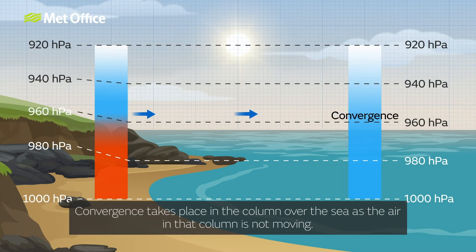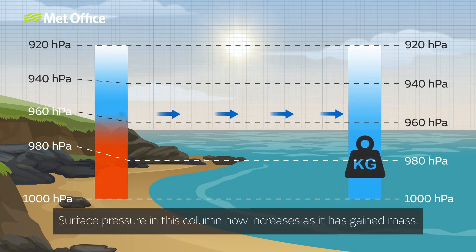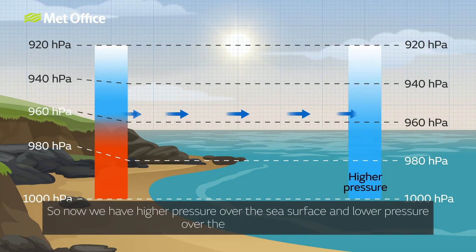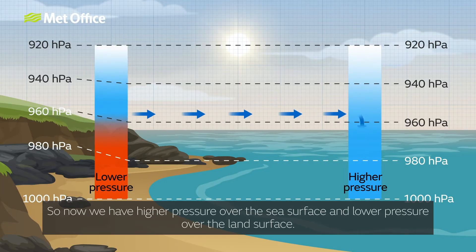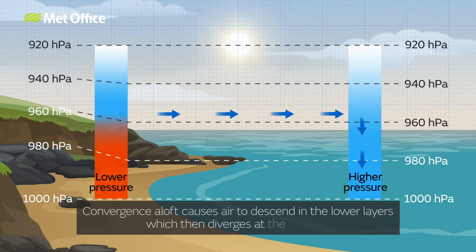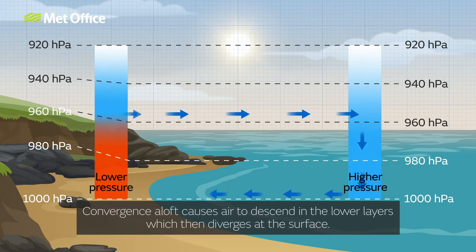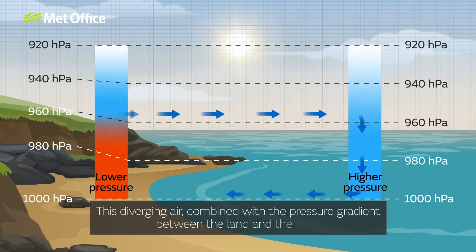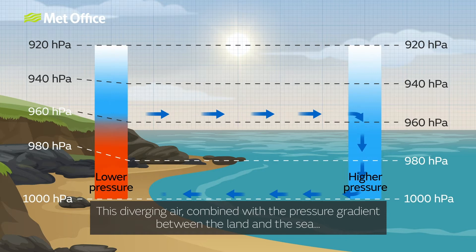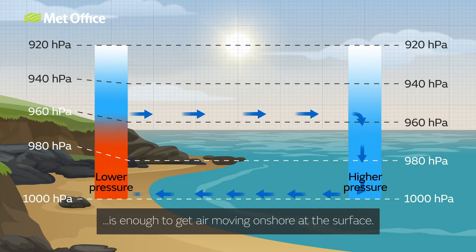Convergence takes place in the column over the sea as the air in that column is not moving. Surface pressure in this column now increases as it has gained mass. So now we have higher pressure over the sea surface and lower pressure over the land surface. Convergence aloft causes air to descend in the lower layers, which then diverges at the surface. This diverging air combined with the pressure gradient between the land and the sea is enough to get air moving onshore at the surface.